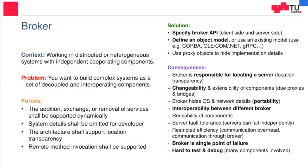Let's talk about the individual attributes and properties of the broker. The context is that we work in a distributed and heterogeneous system — or multiple systems — and we want to decouple them. We want to make them compatible so they can communicate, but also decouple them so they don't depend on each other. We want to add or exchange services dynamically at runtime: if a new server appears, it should just register at the broker and the broker informs it about new tasks. System details shall be omitted — as a client developer, you shouldn't even be aware that you are using a broker or how it works in the background.